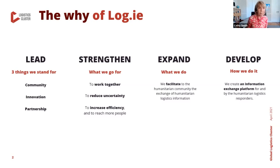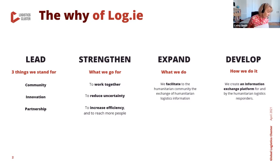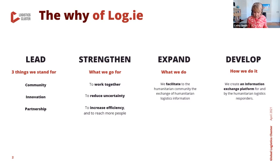Three things we stand for: community, innovation, and partnership. What we go for: we want a humanitarian community that works together, we want to reduce uncertainty of information in times it is needed the most, and we want to increase efficiency so we can reach more people and save more lives. We want to facilitate to the whole humanitarian community a way to exchange humanitarian logistics information, and we do it by creating an information exchange platform for and by the humanitarian logistics responders.